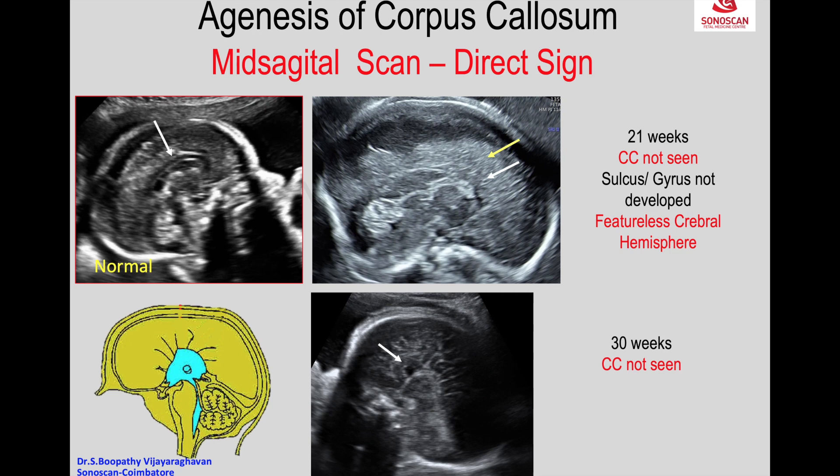At 30 weeks the cingulate sulcus should have developed and should be seen, but the corpus callosum is not seen, and the cingulate sulcus should be present but it is not seen.